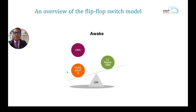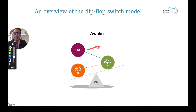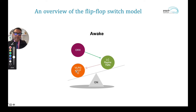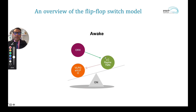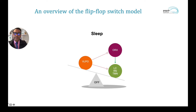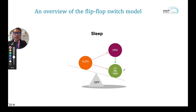In the awake state, orexin stimulates wakefulness, and monoaminergic nuclei stimulate wakefulness, with orexin neurons also pushing the monoaminergic nuclei to stimulate wakefulness — giving a triple-whammy effect. Monoaminergic nuclei also prevent the ventrolateral preoptic nuclei from promoting sleep, resulting in the overall awake state. When it comes time to sleep, VLPO kicks in, inhibiting orexin and inhibiting the monoaminergic nuclei, thus promoting sleep.